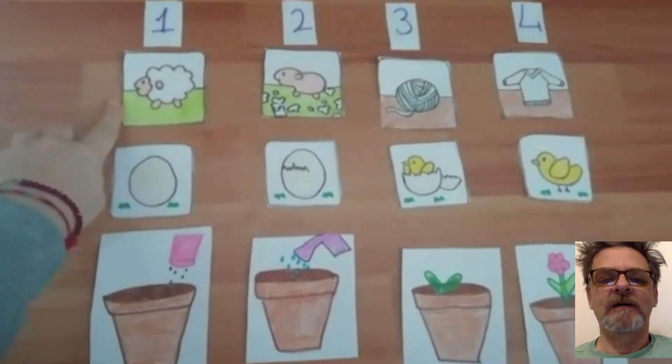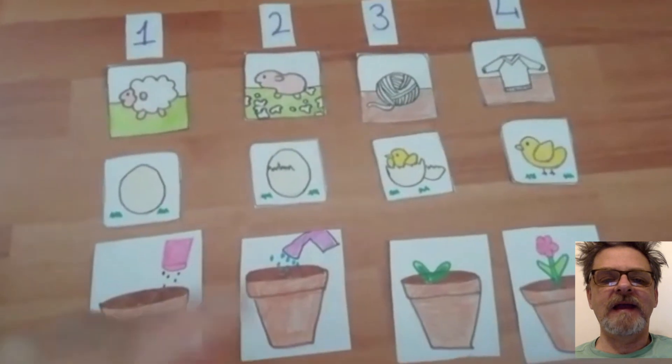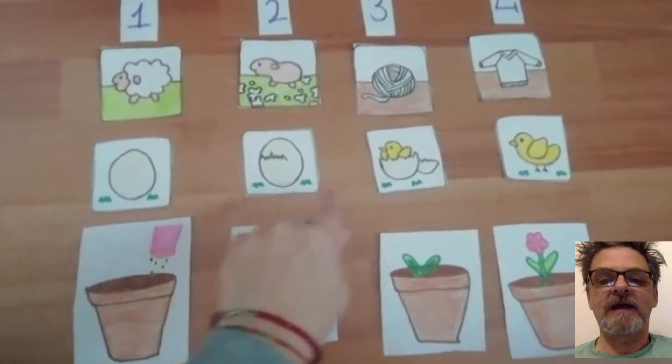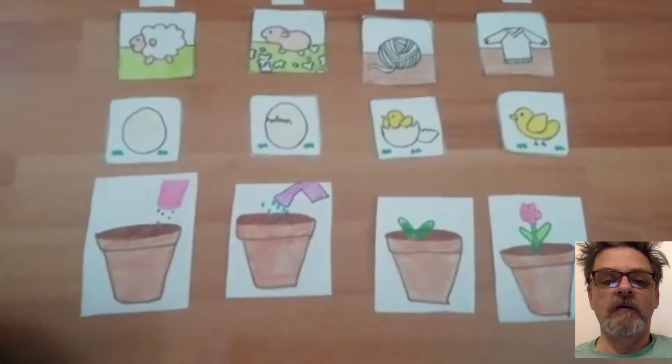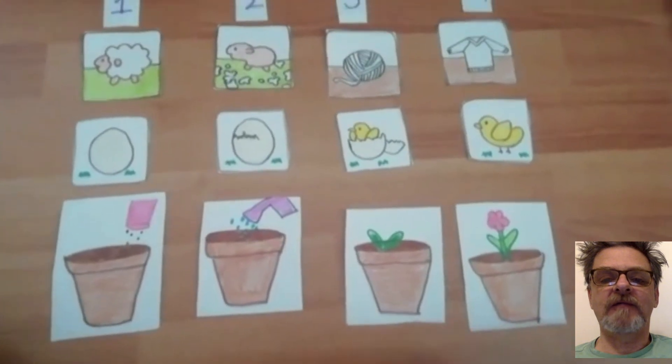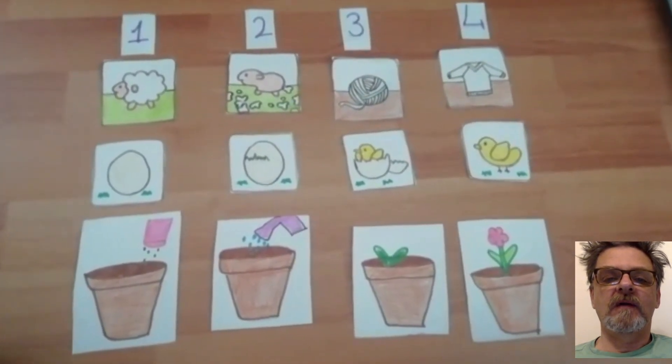That's a woolly sheep. Sheared wool and a jumper. An egg. Cracked egg. The chicken's coming out of the egg. And now the chicken is completely out of the egg. Putting the seeds in the pot. Adding water. It sprouts. And then we have a flower. So there you go. All in the right order.